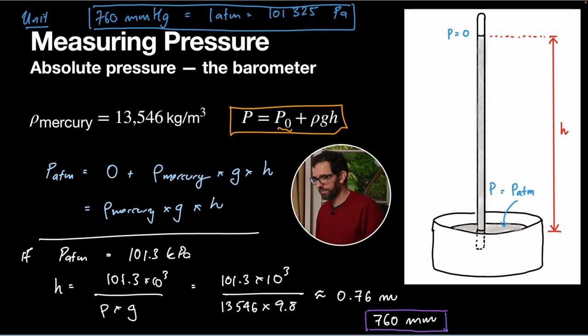And for example your blood pressure, if you get your blood pressure taken, 120 over 70 or whatever, those units are millimeters of mercury. So to turn them into pascals you have to use this conversion.